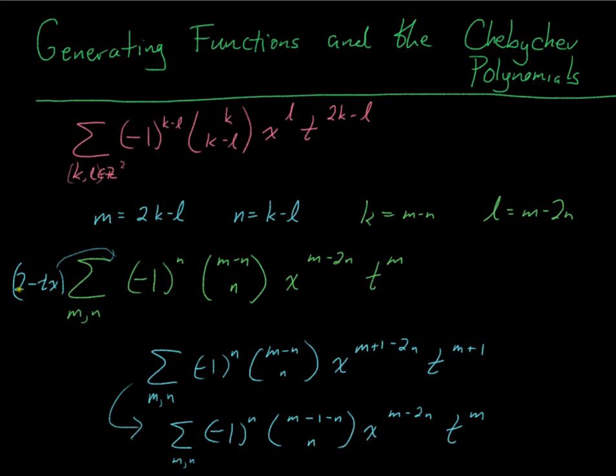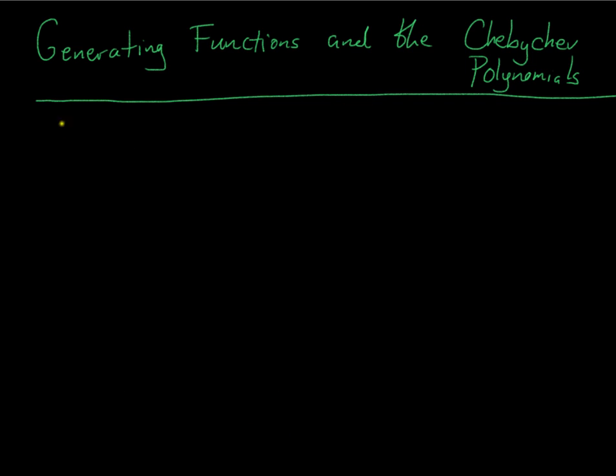So I can combine that together with the 2 guy. So they both have (-1)^n, x to the (m minus 2n), t to the m. The first one is going to have 2 times the original binomial coefficient, and then minus the shifted binomial coefficient. So let's write all that down. So we're going to have sum over m and n, we've got (-1) to the n, we've got 2 times the original binomial coefficient, and then we're subtracting this one where m got shifted down by 1. And then we've got x to the (m minus 2n), t to the m.